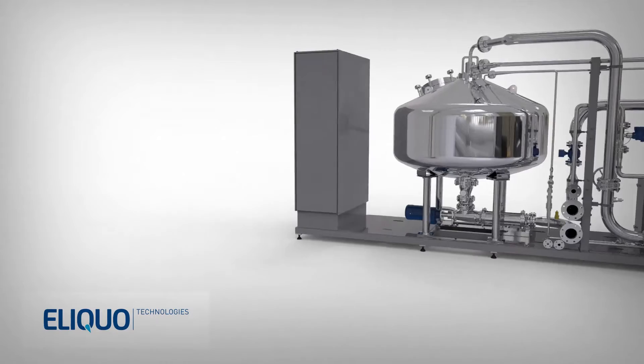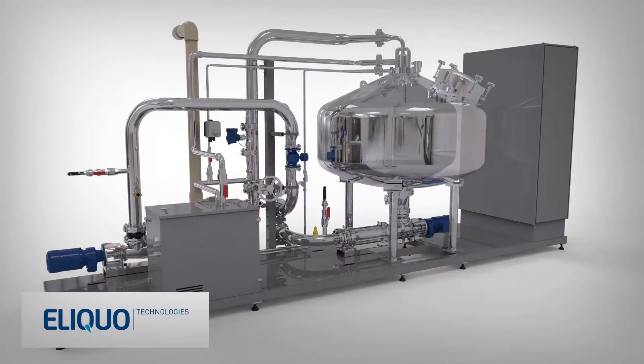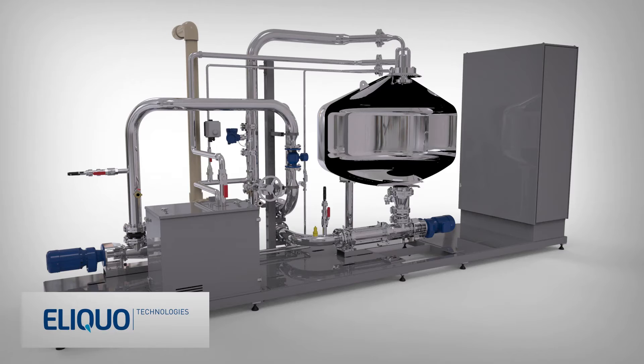The ELOVAC-P is a completely skid-mounted, plug-and-play, compact phosphorus sequestration system that prevents struvite scaling.